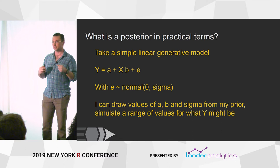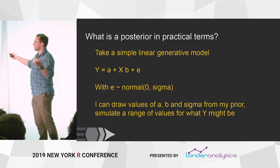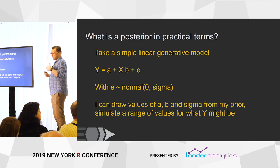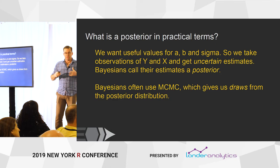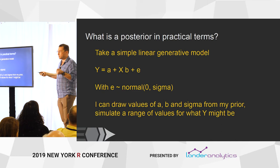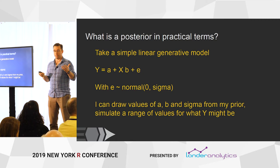Let's step back and talk about what a posterior is in a really easy-to-grasp setting. Take a simple linear generative model with intercept, slope, and normal noise. I can plug in any values of a, b, and sigma, and for a given x simulate some potential y values — that's what makes a generative model. In practical terms, all I've done is draw from my prior; I can parameterize this and simulate fake data, but that data is completely meaningless. I want parameter estimates a, b, and sigma to have some bearing on the problem I'm working with.